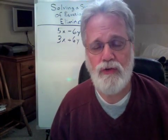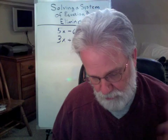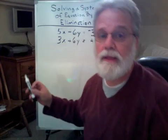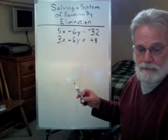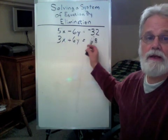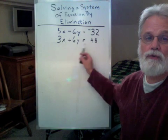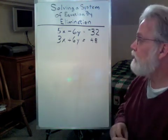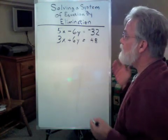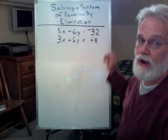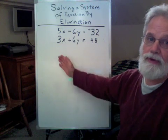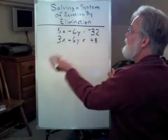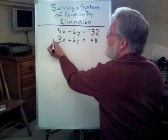Now, when we solve a system of equations, we take two equations that are in the ax plus by equals c form, and notice these both are already in that form, and we add them or subtract them. So we have an example here of 5x minus 6y equals 32, and 3x plus 6y equals 48. Let's just add these two equations together.